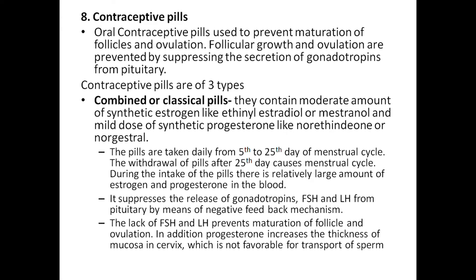Contraceptive pills: all contraceptive pills are used to prevent maturation of follicles and ovulation. Follicle growth and ovulation are prevented by suppressing the secretion of gonadotropins. There are three types. First is the combined or classical pill, containing a moderate amount of synthetic estrogen like ethinyl estradiol or mestranol, and a mild dose of synthetic progestogen like norethindrone or norgestrel.